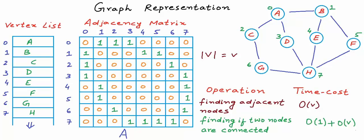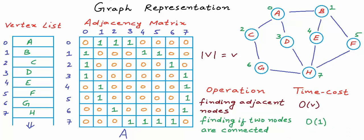Scanning the vertex list to figure out indices can be avoided by using extra memory to create a hash table with names and indices as key-value pairs. Then the time cost of finding an index from a name would also be O(1). With adjacency matrix representation, the time cost of most frequently performed operations is in order of number of vertices — not in order of number of edges, which can be as high as the square of the number of vertices.